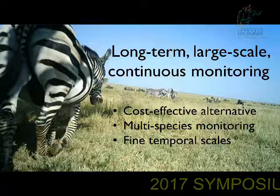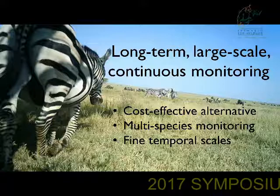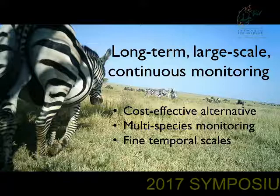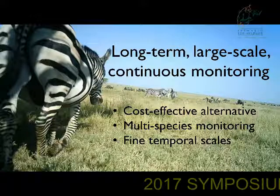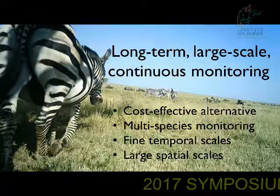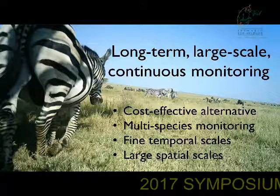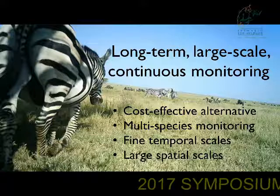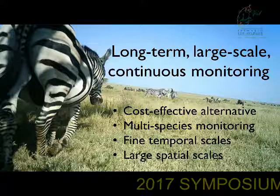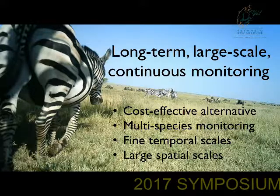The continuous monitoring also allows you to capture animals that are active across all times of day, so you'll also get information on your crepuscular and nocturnal species. And finally, with a comprehensive survey, you can monitor a wide variety of different habitat types with equal effort, and also cover very large spatial expanses, which reduces your bias in overall abundance estimates.